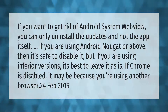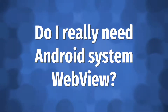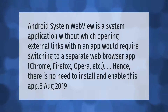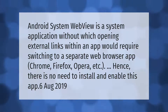If Chrome is disabled, it may be because you are using another browser. Android System WebView is a system application without which opening external links within an app would require switching to a separate web browser app — Chrome, Firefox, Opera, etc. Hence there is no need to install and enable this app separately.